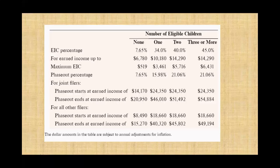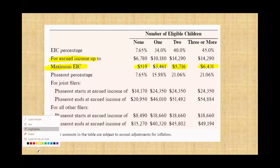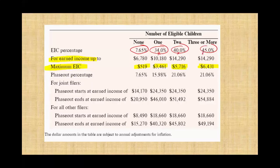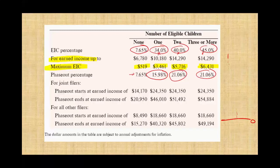Let's look at the phase out and ranges. The maximum EIC amounts are shown for three or more children, two children, one child, and none. The applicable percentage rates are 7.65%, 34%, 40%, and 45%. You take the rate times the income. Once you reach the phase out range, the rate drops and your credit starts to be reduced. Simply put, your credit starts high. The more you make — up to the phase out — the more you get. Then once you exceed that point, the more you make, the less you get, until the credit phases out entirely. For married filing jointly with one child, that's up to $24,350 for maximum credit, then reduced up to $46,010 where the credit disappears.